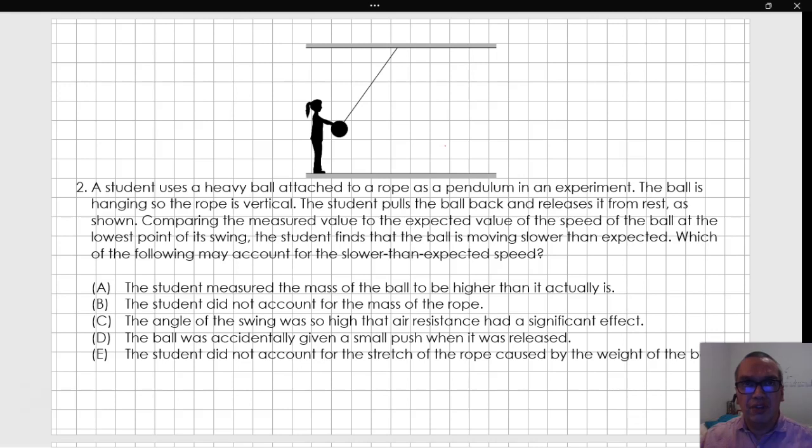A student uses a heavy ball attached to a rope as a pendulum in an experiment. The ball is hanging so the rope is vertical. The student pulls the ball back and releases it from rest, as shown. Comparing the measured value to the expected value of the speed of the ball at the lowest point of its swing, the student finds that the ball is moving slower than expected. Which of the following may account for the slower than expected speed?